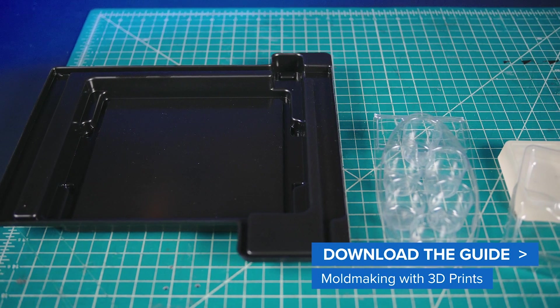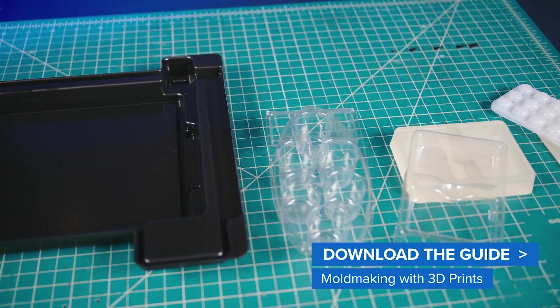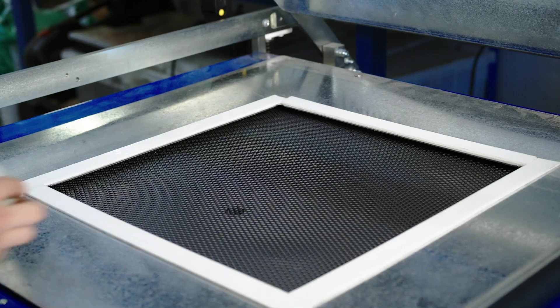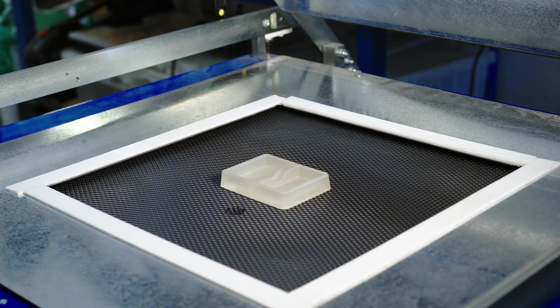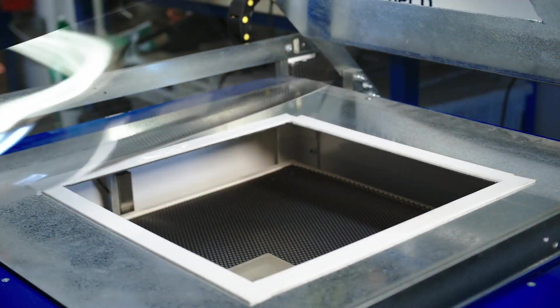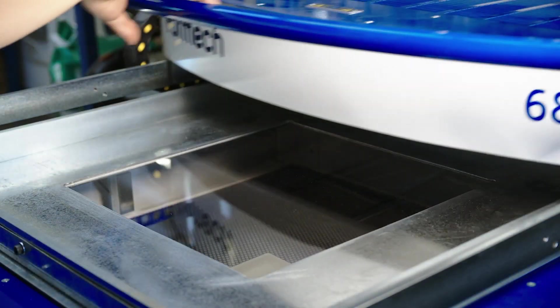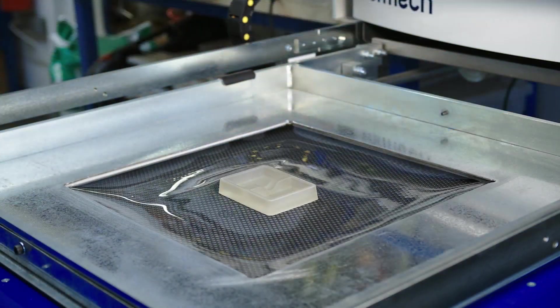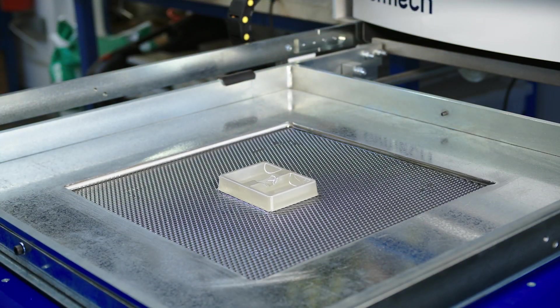The process of vacuum forming is quite simple and requires four basic elements: a mold or tool that will create the shape of the final part, a sheet of plastic, a heat source, and a source of vacuum.